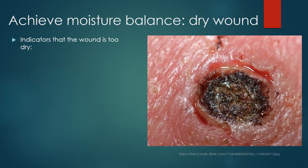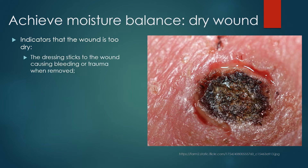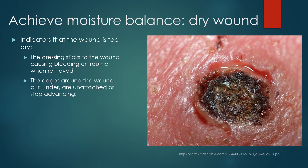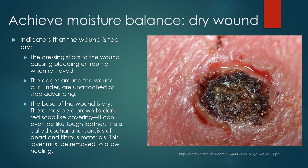To achieve moisture balance with a dry wound: indicators that a wound is too dry include the dressing sticking to the wound causing bleeding or trauma when removed — that's why you need to soak off those dressings or the patient can take them off in a shower. The edges around the wound curl under, are unattached, or stop advancing. The base of the wound is dry; there may be a brown to dark red scab-like covering that can be like tough leather. This is called eschar and consists of dead and fibrous materials. This layer must be removed to allow healing.